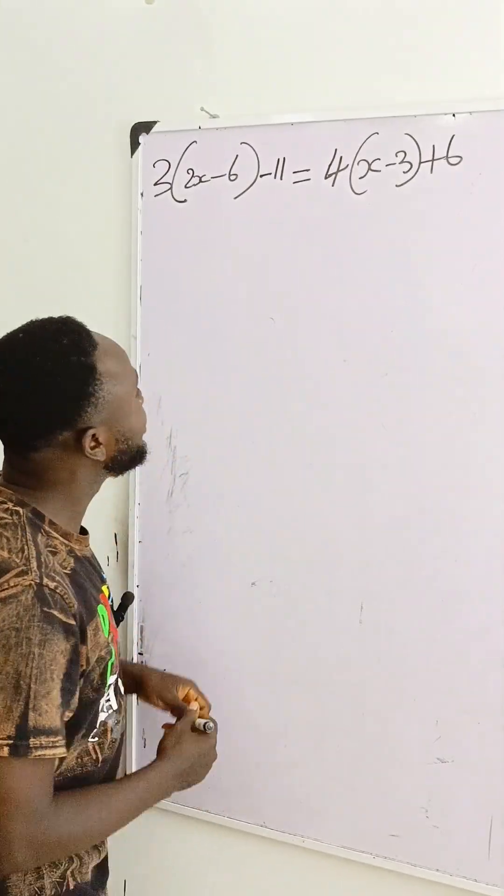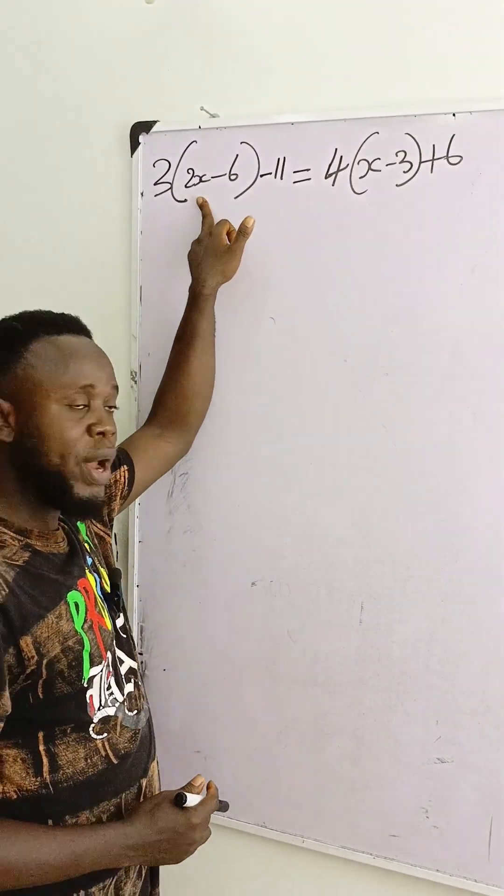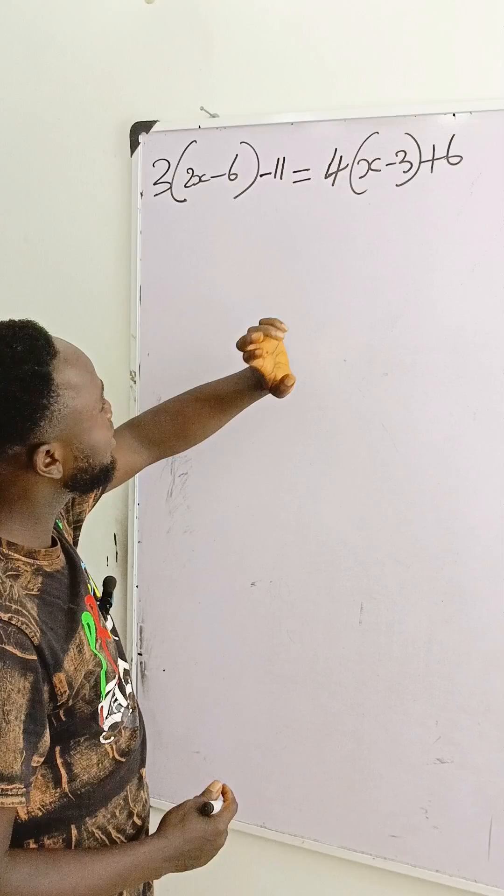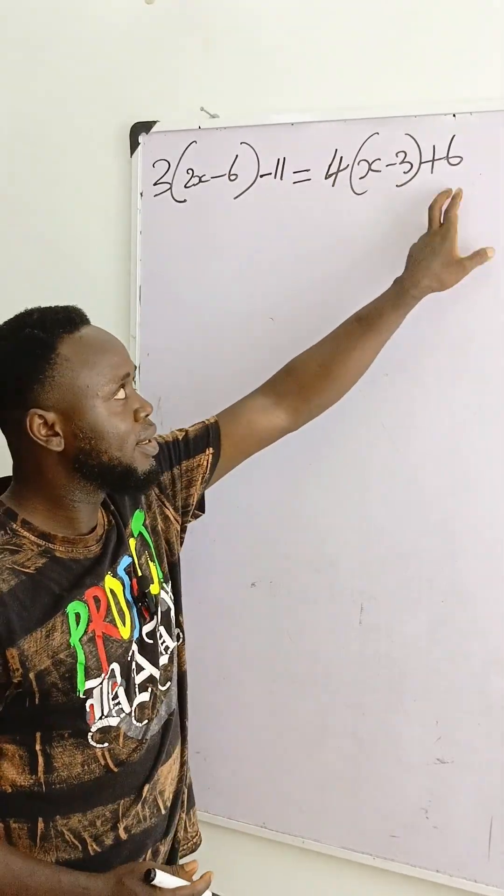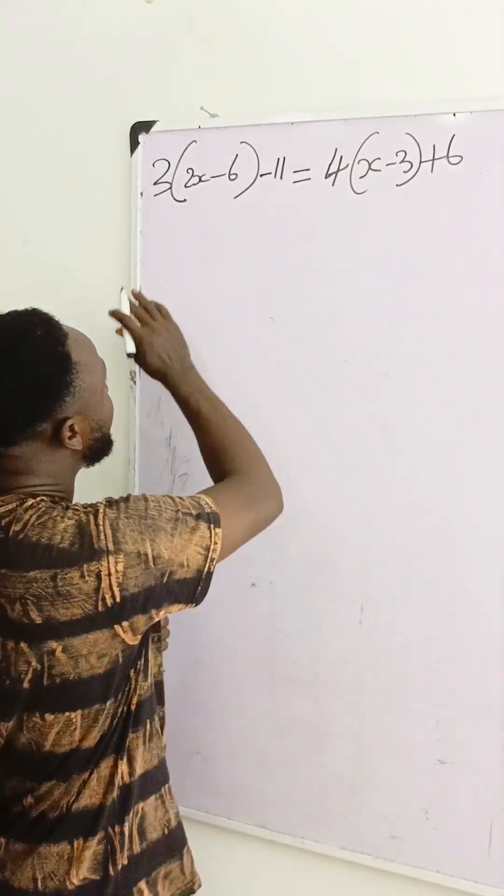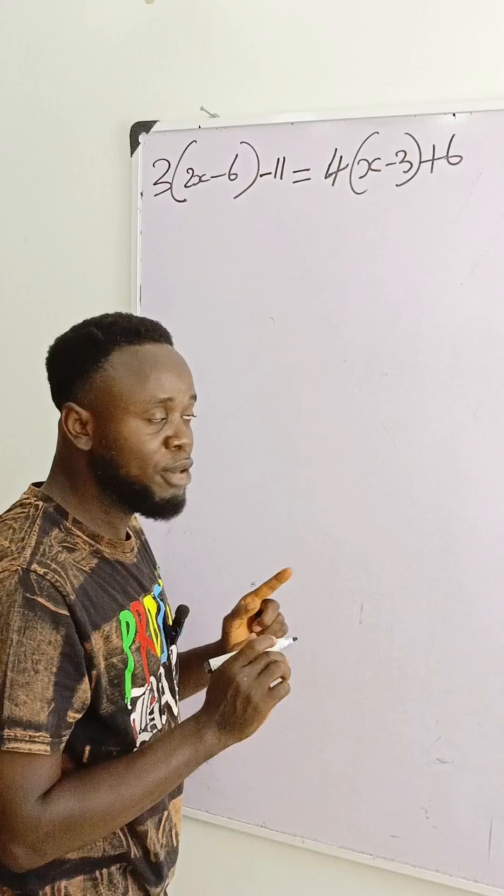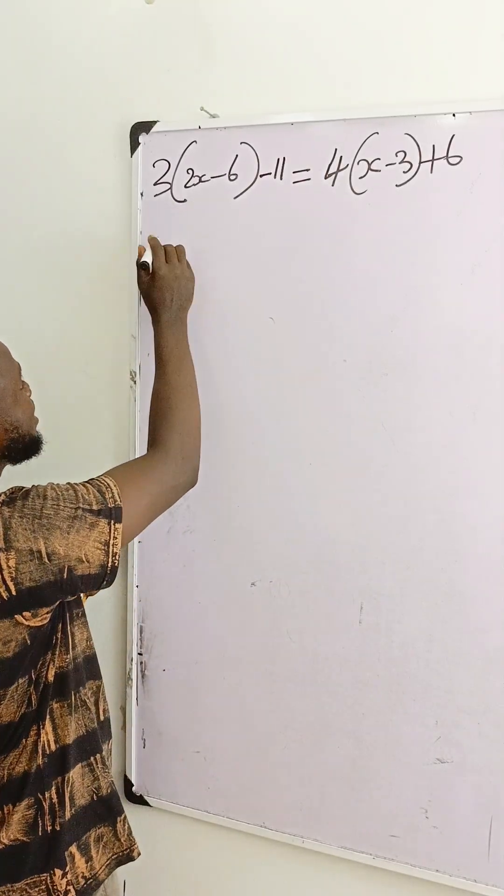Let's solve this simple problem we have on the board: 2(2x-6)-11 = 4(x-3)+6. The first thing we're going to do is to open the brackets. 3 times 2x is 6x.